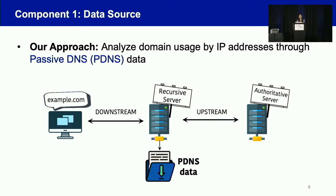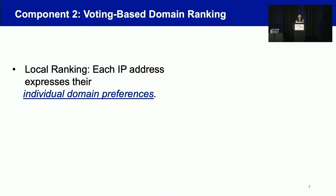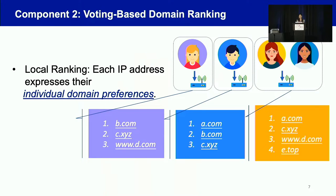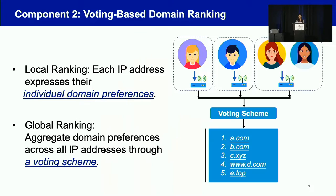Now we have the data source. For our second component, our exploration drives our direction into a voting-based domain ranking method. The basic idea is: first, each IP address will express its individual domain preference. As shown in this figure, we calculate an individual ranking for each IP address. Then we aggregate domain preferences across all IP addresses through a voting scheme, which serves as a natural solution for preference aggregation combining domain preferences from multiple voters — in our scenario, from multiple IP addresses.